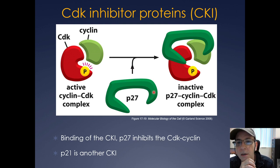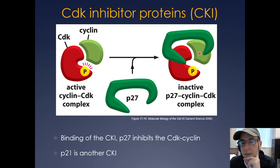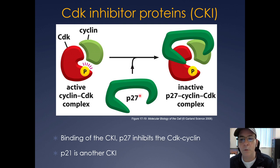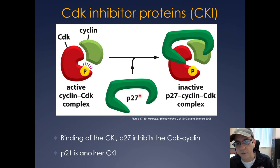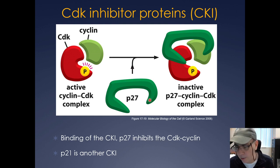Another way cyclin-CDKs are controlled is by CDK inhibitor proteins (CKIs). You have your active cyclin-CDK, and then a CKI protein — such as P27 — binds to the cyclin-CDK and keeps it inactive. P21 and P16 are other CKIs. Interestingly, these CKIs are often mutated in various cancers: as mentioned, uncontrolled cell cycle control is a hallmark of cancer, and you can get mutations in CKI proteins that leave them non-functional, causing the cell to continue progressing through the cell cycle without any inhibition.